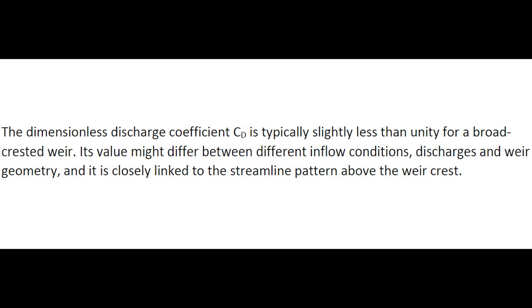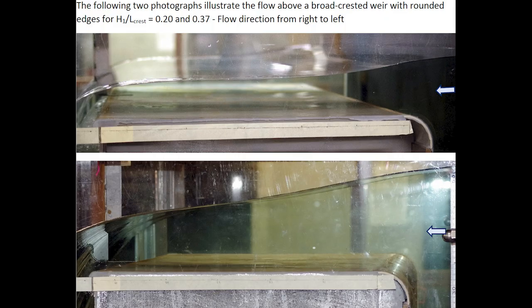The dimensionless discharge coefficient is typically less than 1 on a broad-crested weir. However, its value might differ between different inflow conditions, discharges, and weir geometry, and it is closely linked to the streamline pattern above the weir crest.